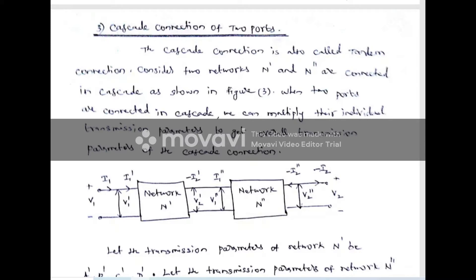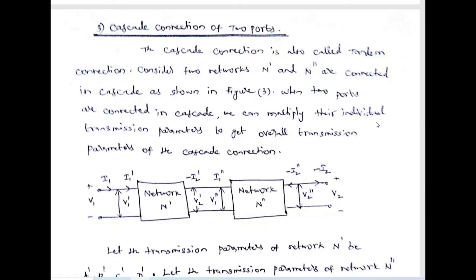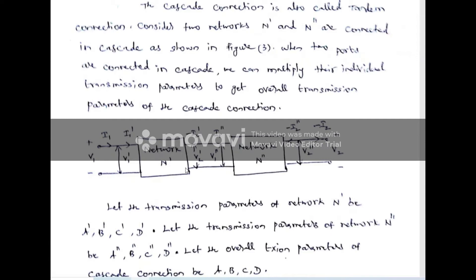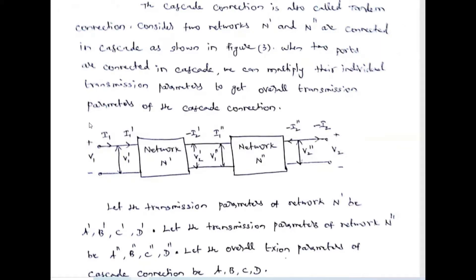In this third connection, the cascade connection of two-port networks, we are going to discuss. In the cascade connection, two networks are connected such that the external input voltage is applied to the first network, the output of the first network is given as the input to the second network, and the overall output is taken from the output of the second network. Such a connection is called a cascaded connection.